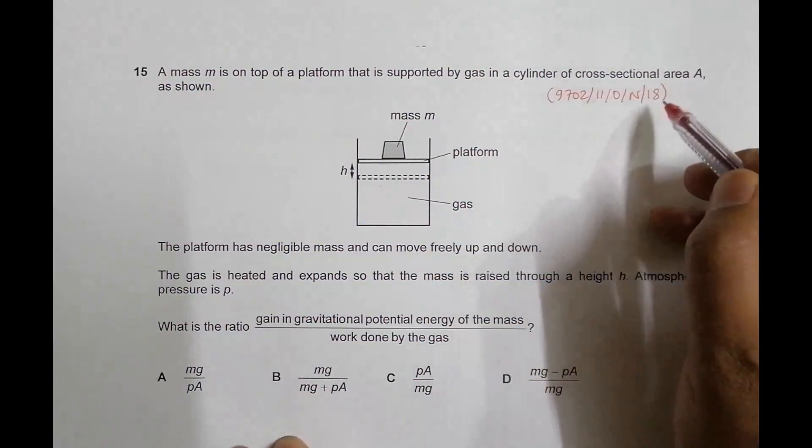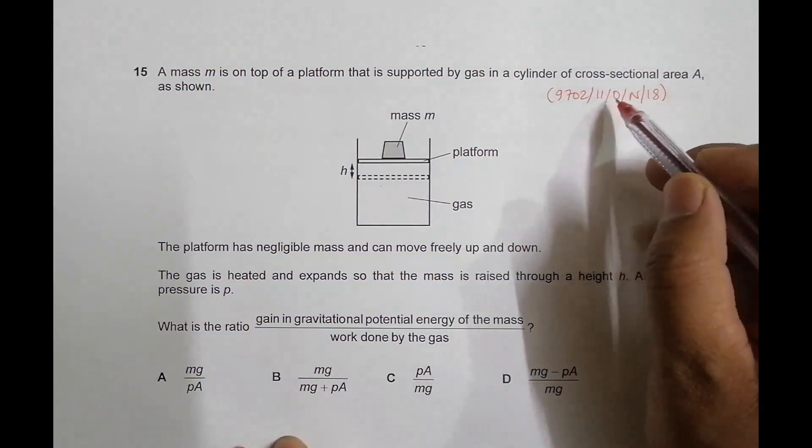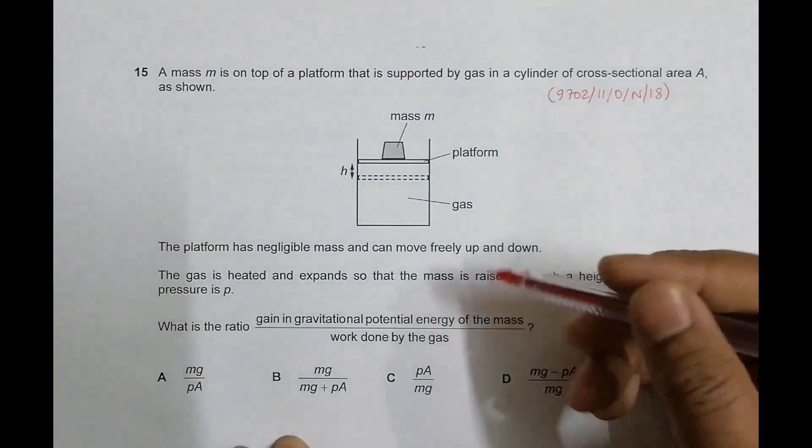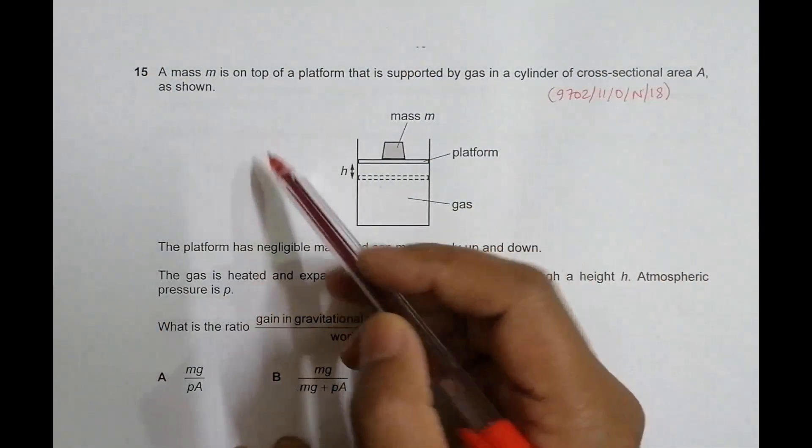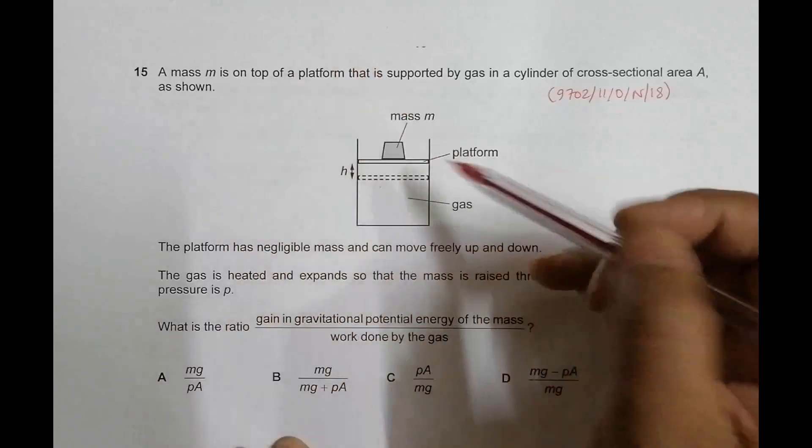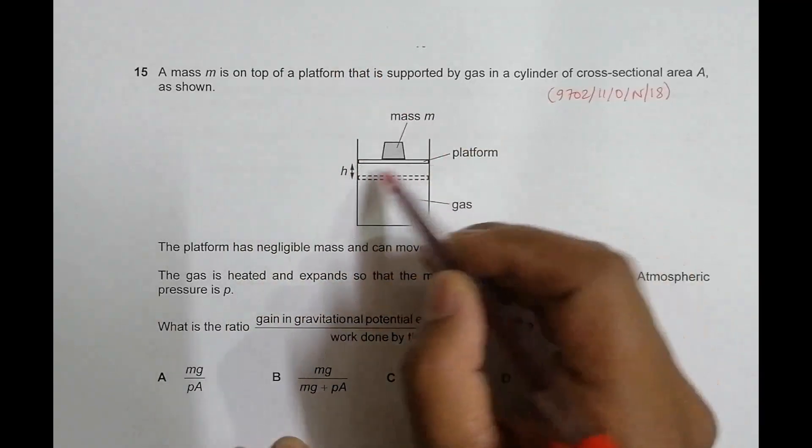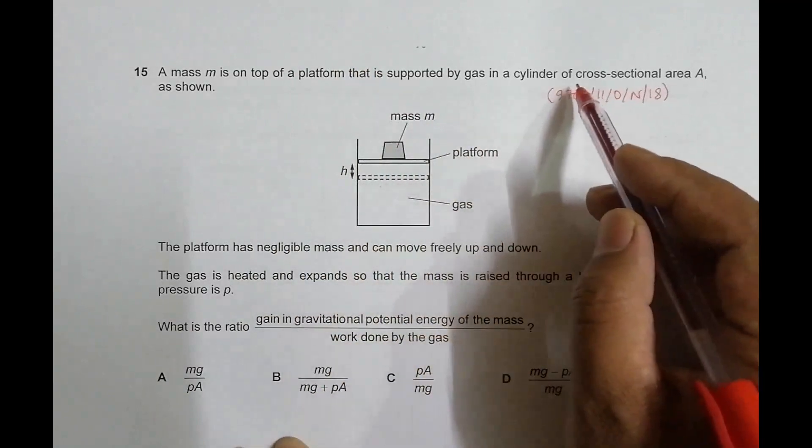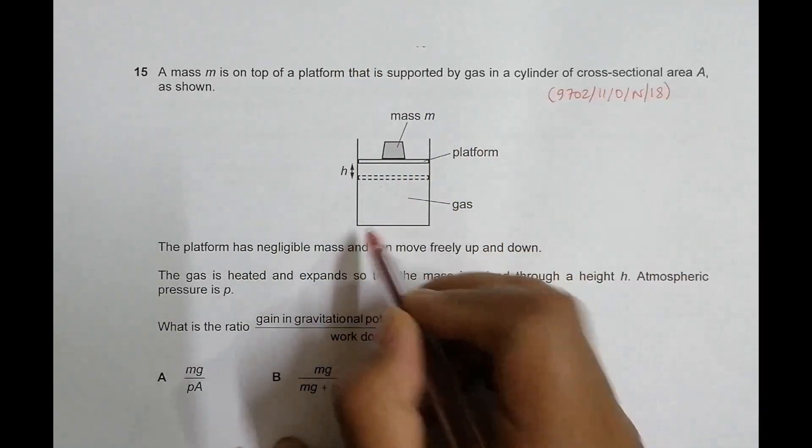Hello folks, this is the 2018 October-November Paper 11, question number 15, concerned with the chapter of work, energy, and power. It says that a mass M is on top of a platform supported by gas in a cylinder of cross-sectional area A. This is the cross section here.